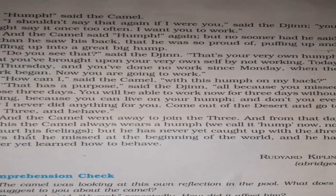'I should not say that again if I were you,' said the Jin. 'You might say it once too often. I want you to work.' Jin was now angry after hearing the word 'hump.' He said, 'I am not going to listen to it again, and I would not repeat it if I were in your place. Stop repeating this word and start doing the work.' But the camel said 'hump' again. No sooner had he said it than he saw his back — which he was so proud of — puffing up and puffing up into a great big hump.